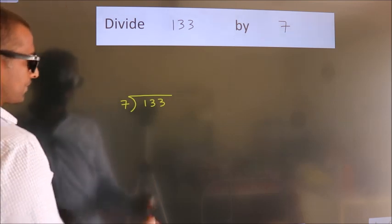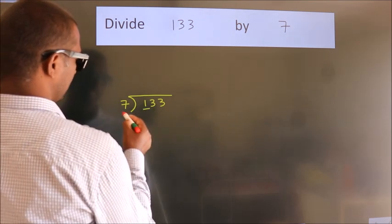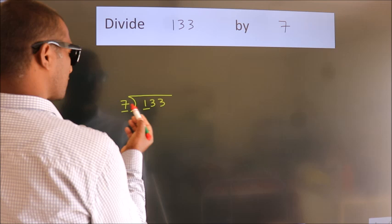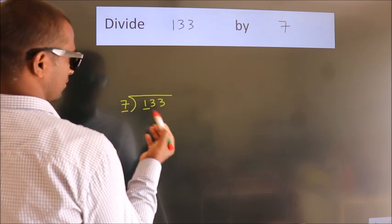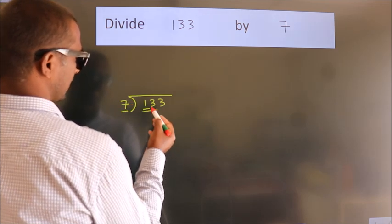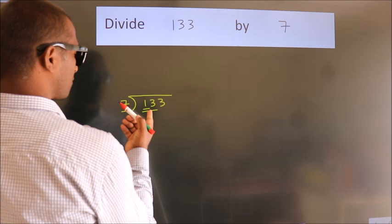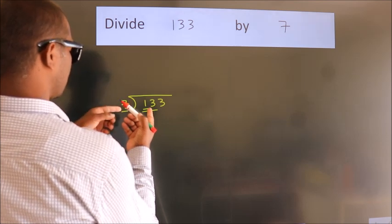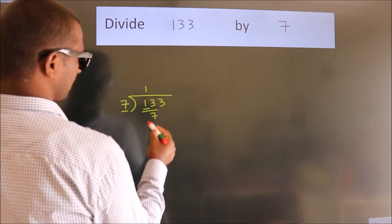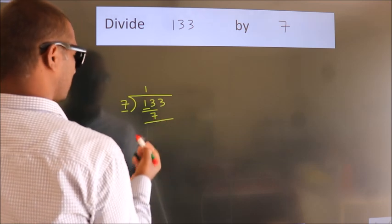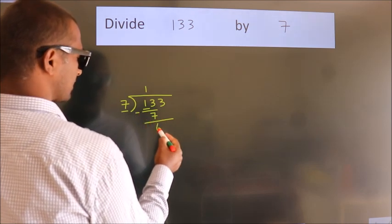Next, here we have 1, here 7. 1 is smaller than 7, so we should take 2 numbers, 13. A number close to 13 in the 7 table is 7 once 7. Now we should subtract. We get 6.